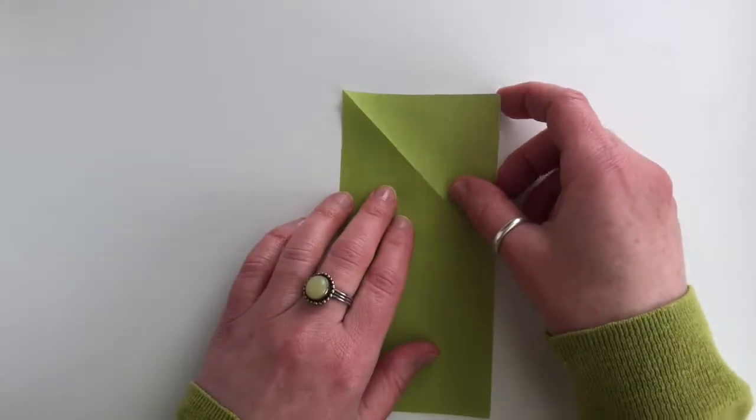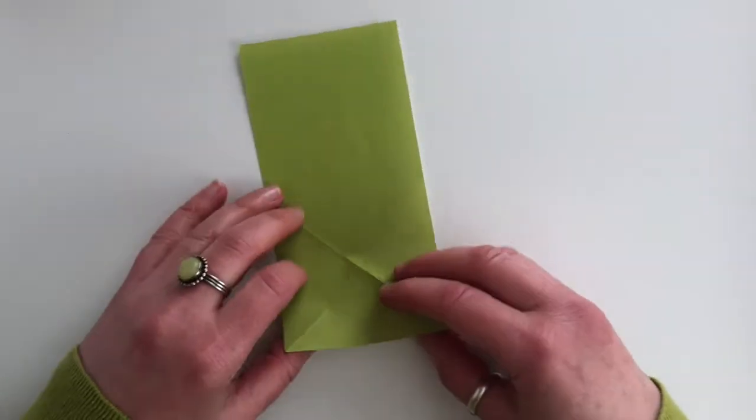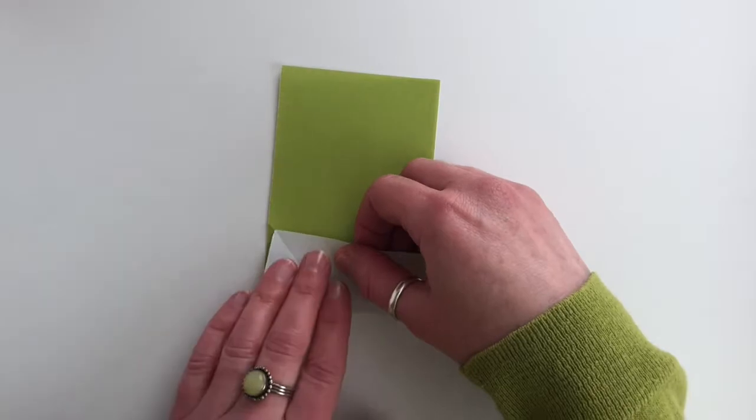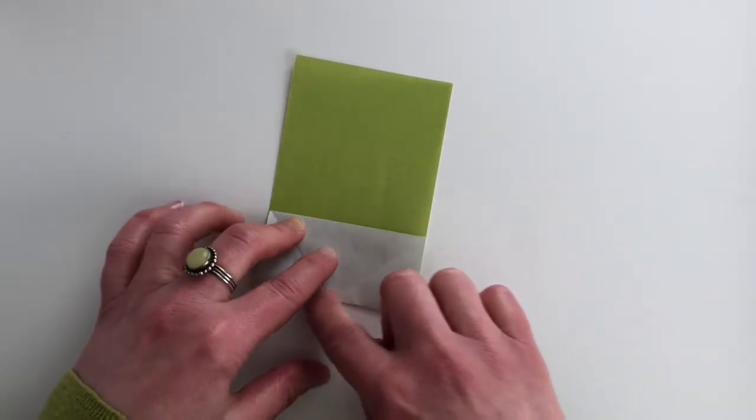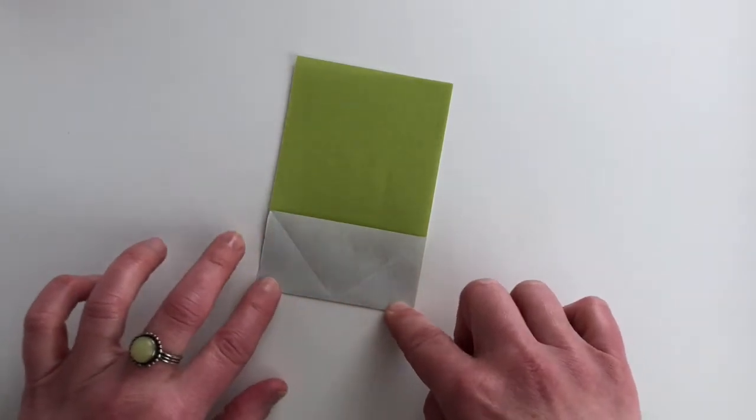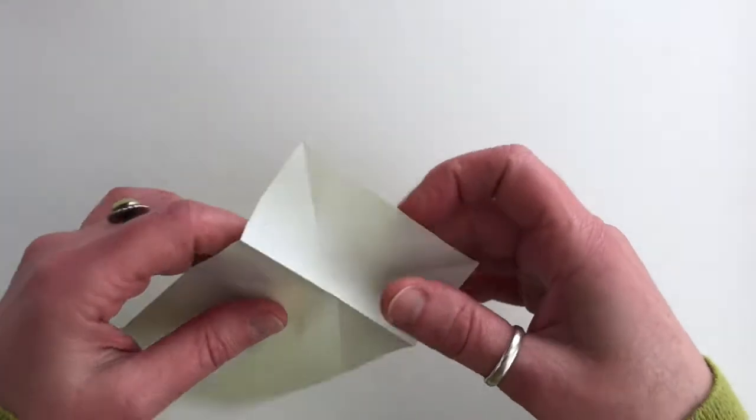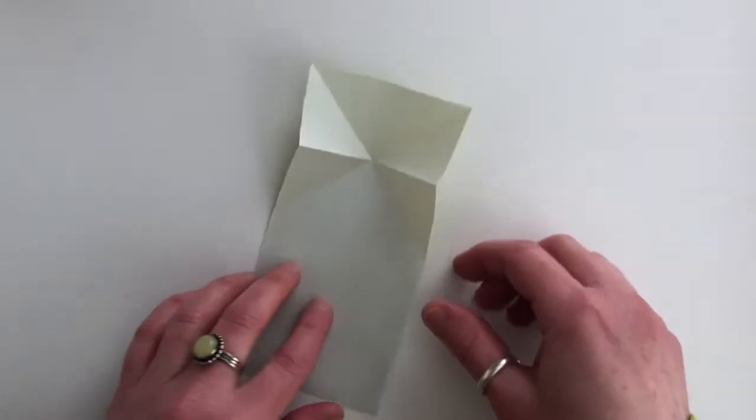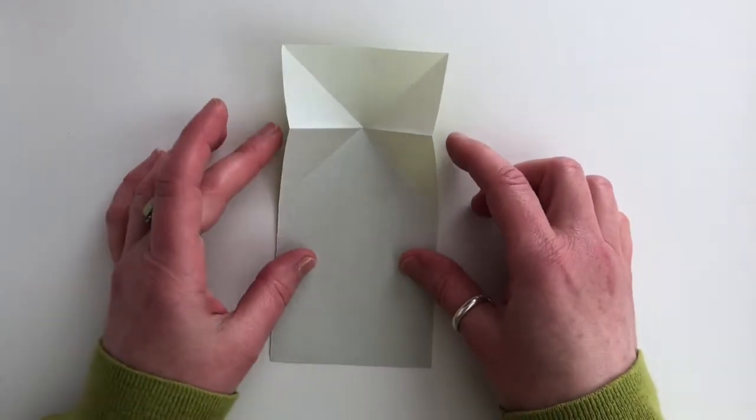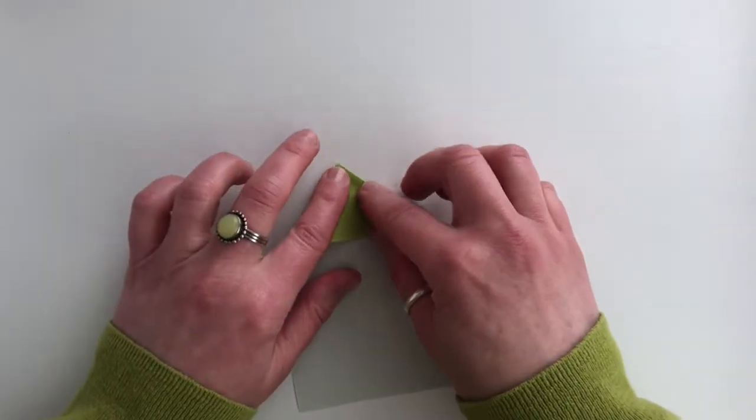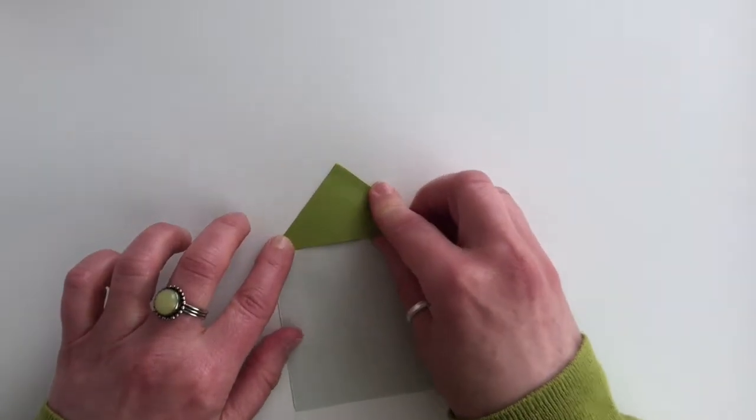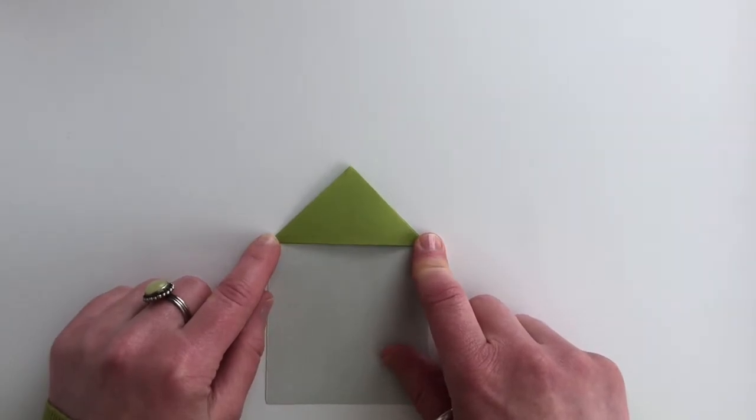Flip it over, and now we're going to fold the top edge down, aligning the previous folds that we made before so that this fold is in the center of the X. And again, we'll flip it over, and you'll see the folds that we've made make it fold very naturally into a nice triangle shape. And now we've made the head of our frog.